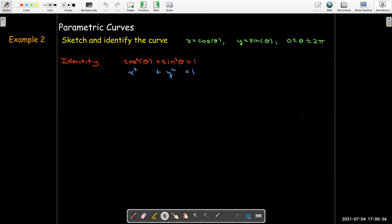And so that means that for my parametric curve, I have x squared plus y squared equals 1. And theta goes all the way around. So theta goes from 0 to 2 pi. So it's the entire unit circle.